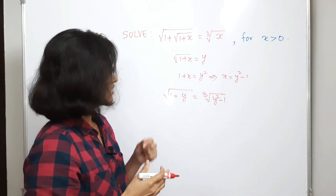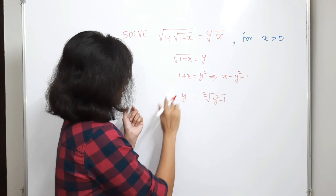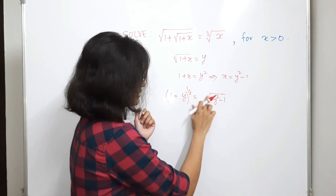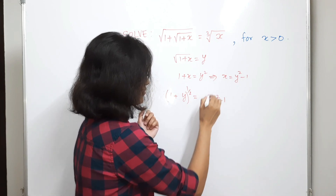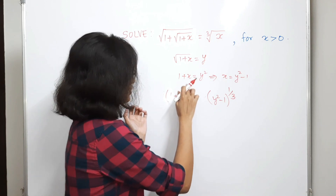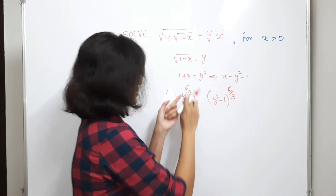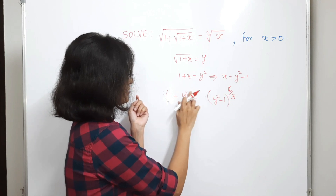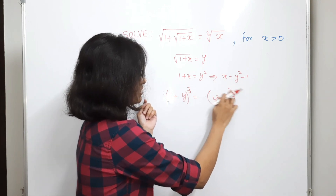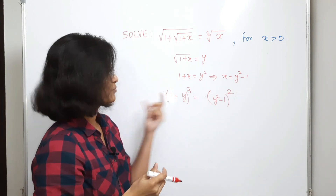Now take the sixth power. The left side is 1 plus y raised to 1 by 2, and the right side is y squared minus 1 raised to 1 by 3. By raising to the 6th power, the left exponent becomes 6 by 2 which is 3, and the right exponent becomes 6 by 3 which is 2. So we have the simpler equation: (1+y)³ = (y²-1)².